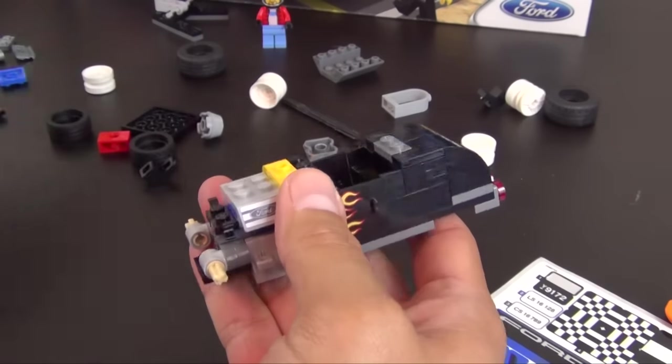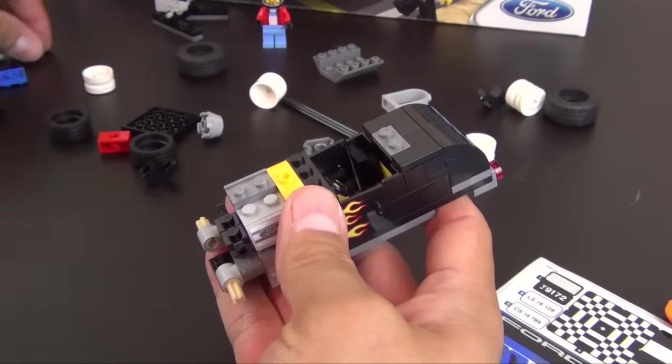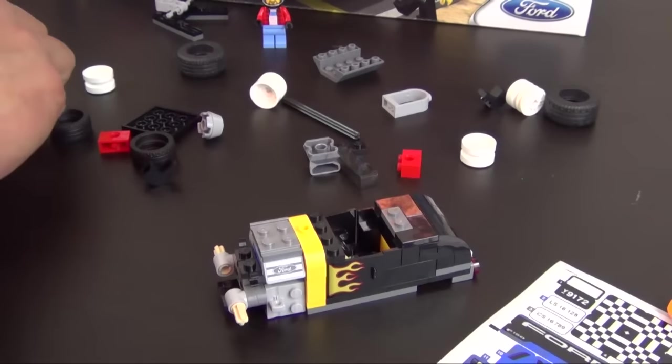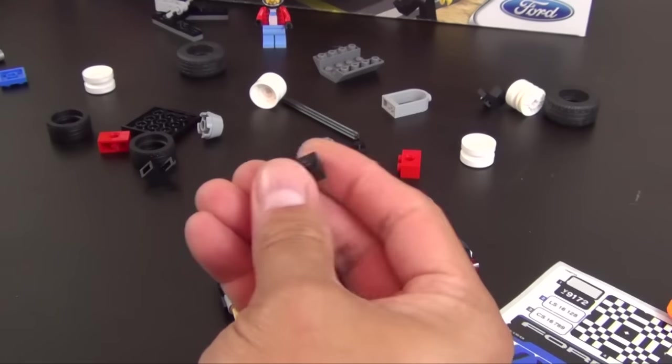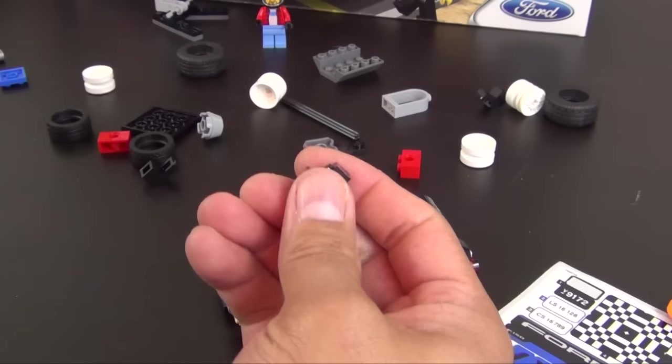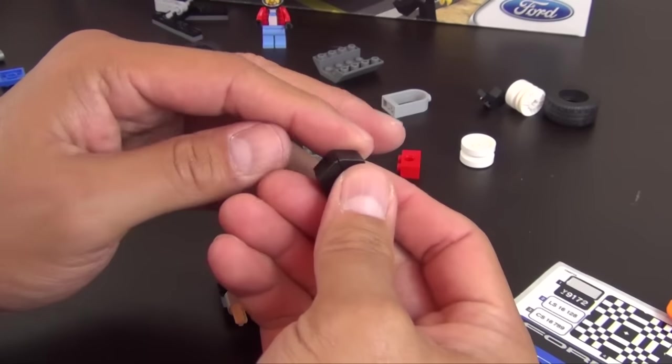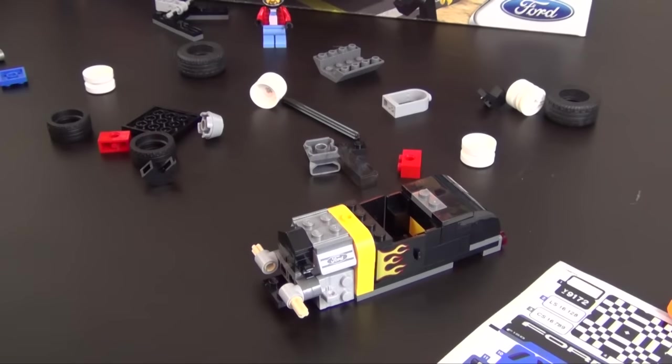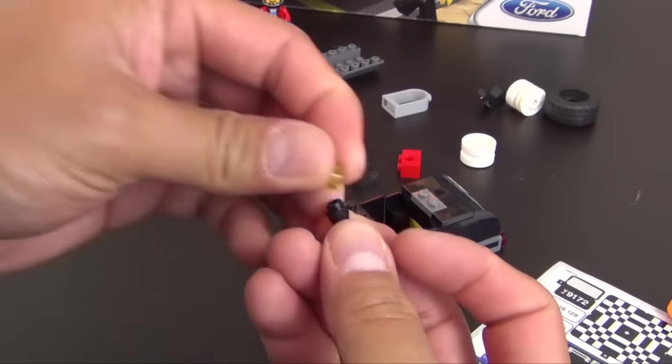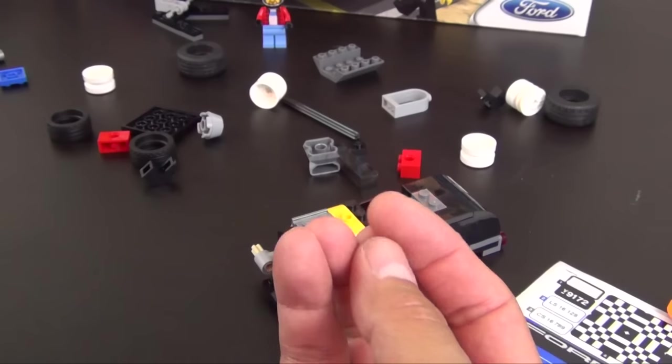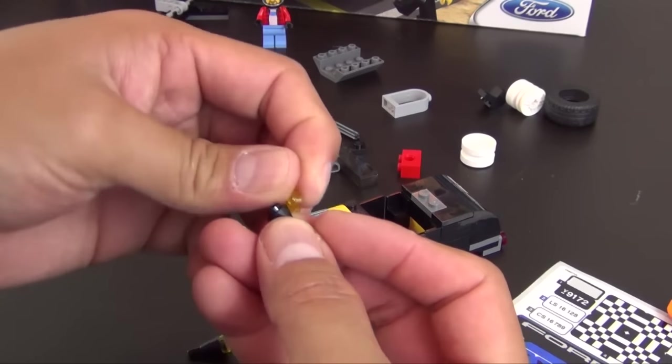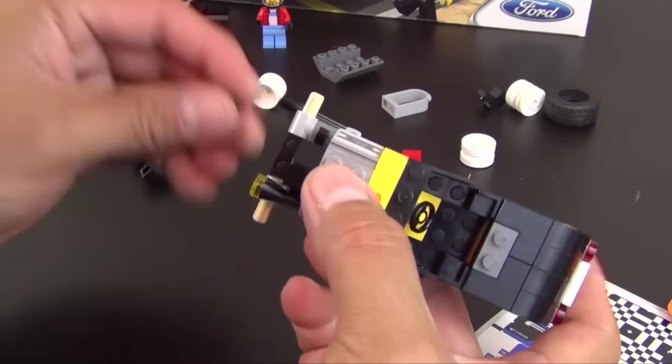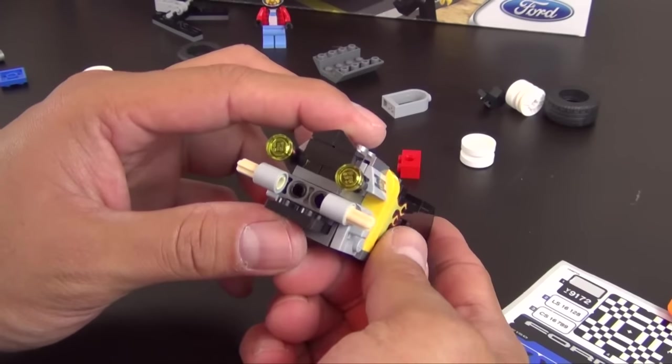Next we have a jumper tile, two of these plates with the rails on the side, two one by two plates and then two cheese slopes. Two of these black ice cream cone pieces, we're going to put a trans yellow one by one round tile on each one.